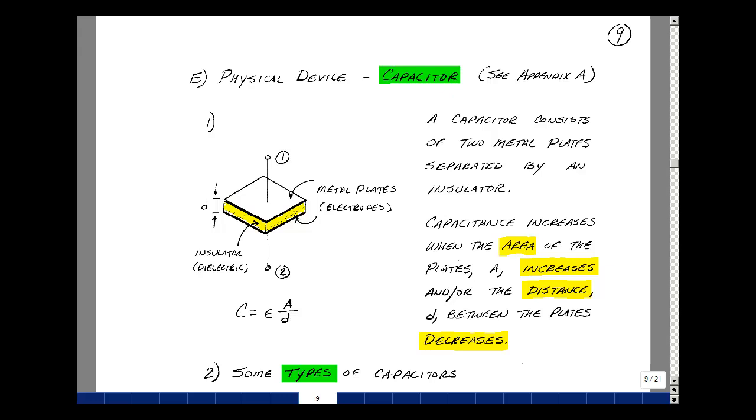Now, what is a capacitor? It consists of two metal plates separated by an insulator. An insulator is a very high-resistant material. You can see why the current passing through here with a DC voltage would eventually be very small.